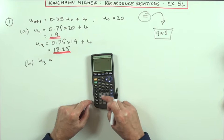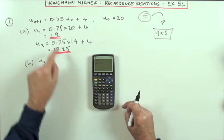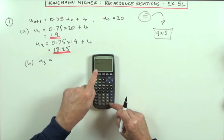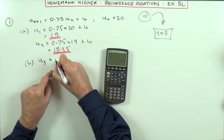Having pressed equals, 20 is stored into it. And then if I just do times 0.75, I've got answer times 0.75. That means 0.75 times the last answer. Add on the 4. Then when I press equals, I get my 19. Now that I've got the 19, when I press equals again, that answer now becomes that last equals that was put in. So I get 18.25.